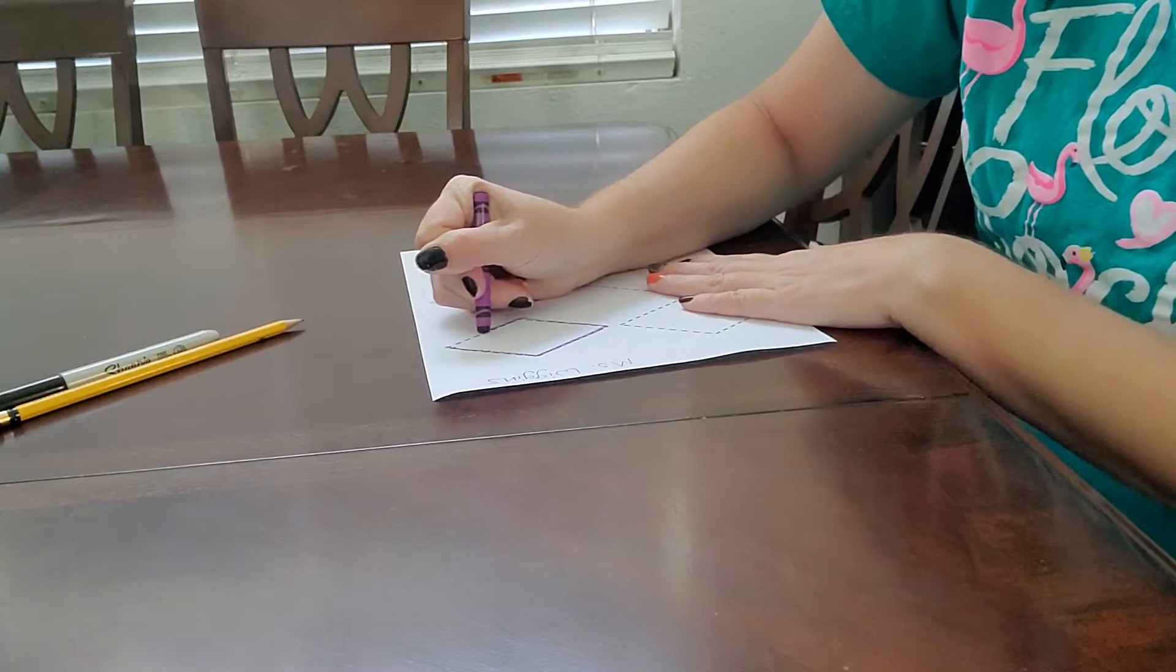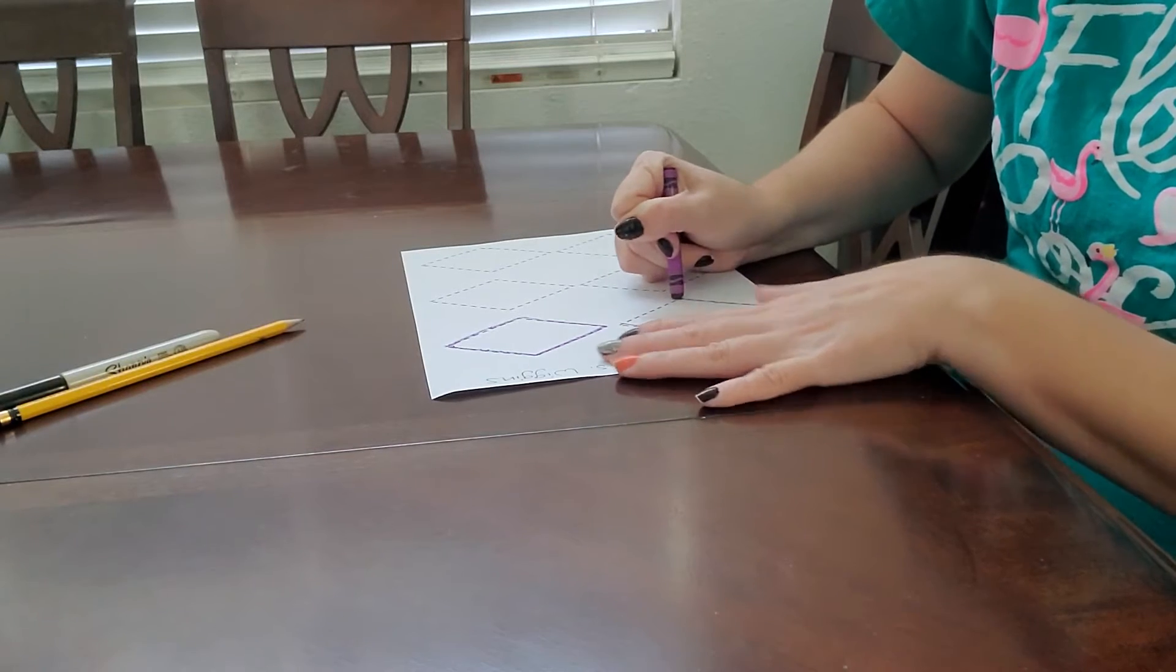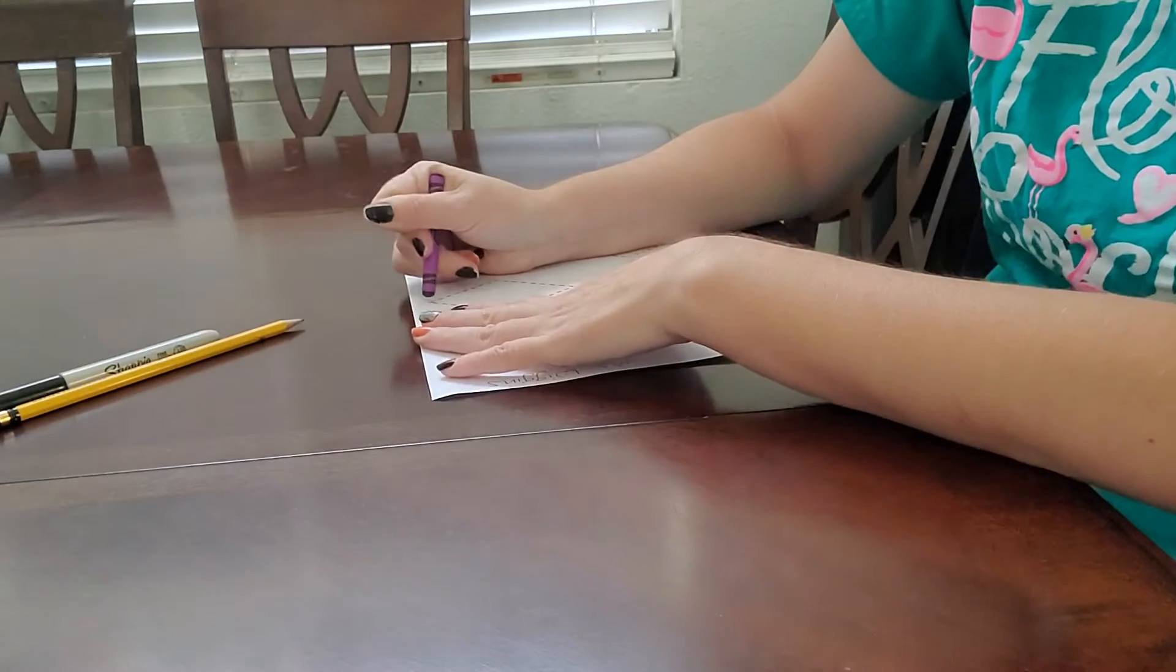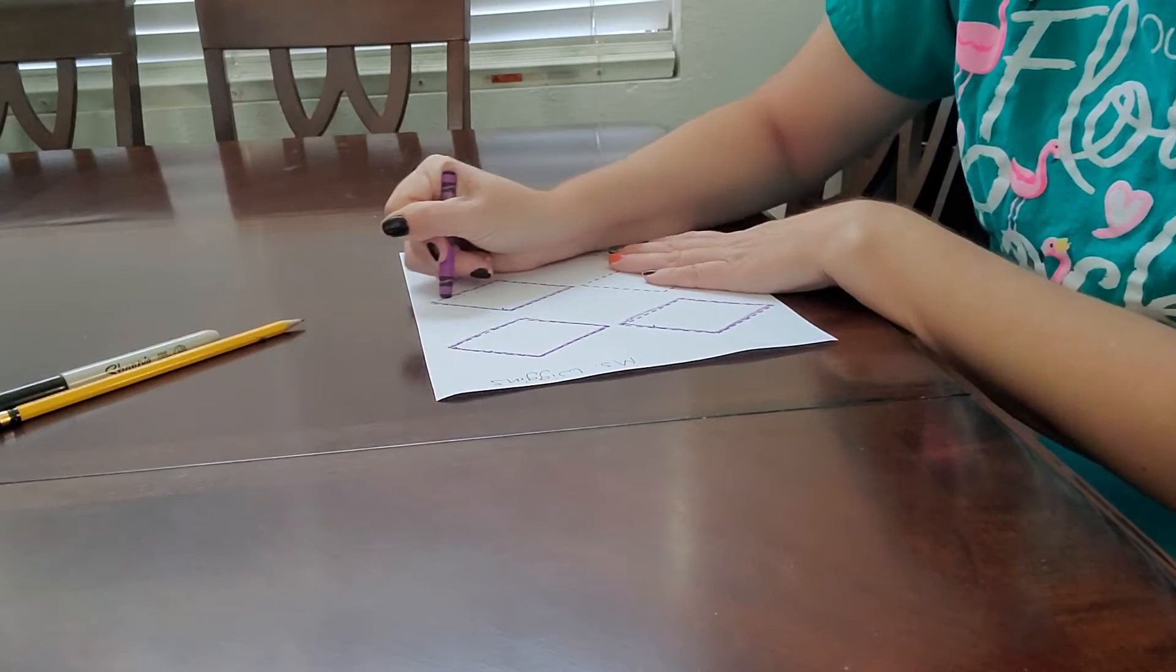Remember, a diamond has four sides, but the lengths don't all have to be the same length. They can be different lengths depending on what diamond you're drawing.